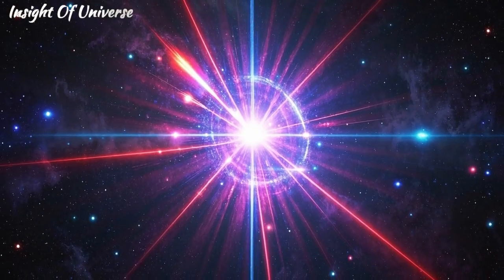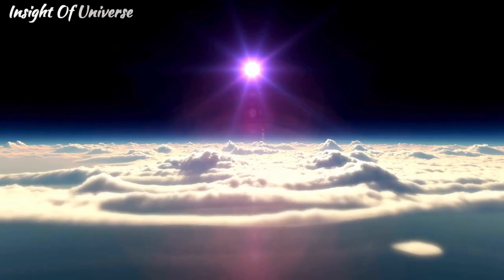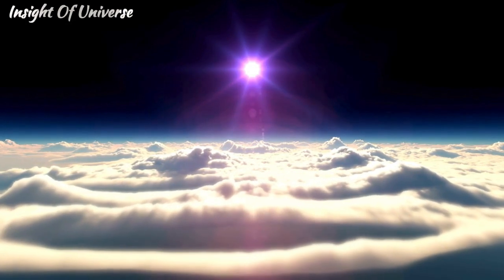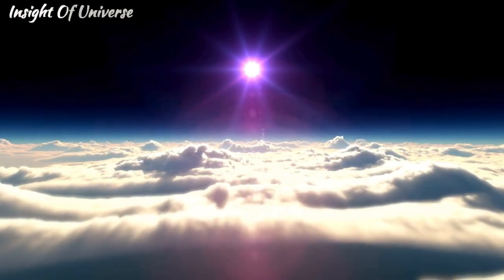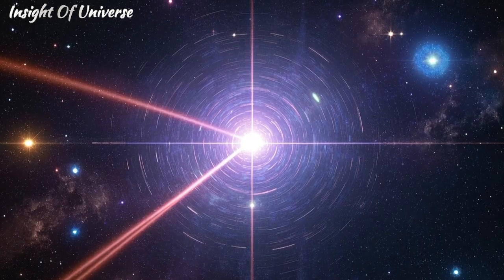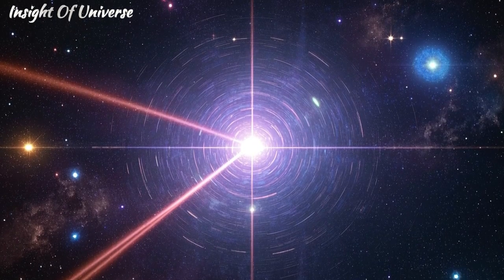The pulsar's gravity is so intense that it begins to steal material from the white dwarf, ripping away layers of superheated plasma that are accelerated to near the speed of light. This material forms an accretion disk around the pulsar.